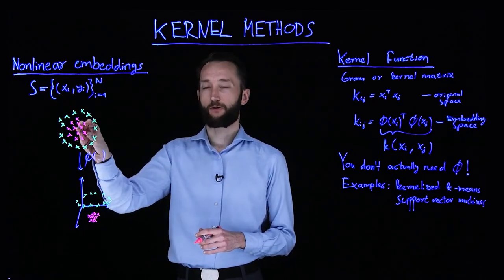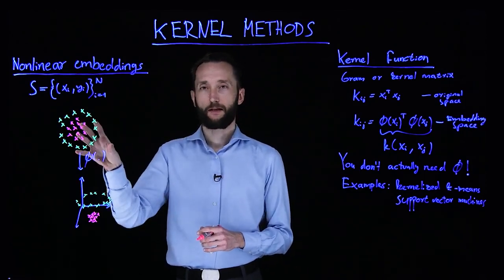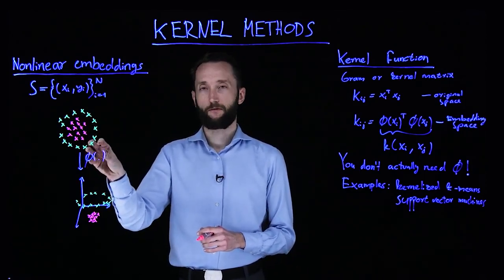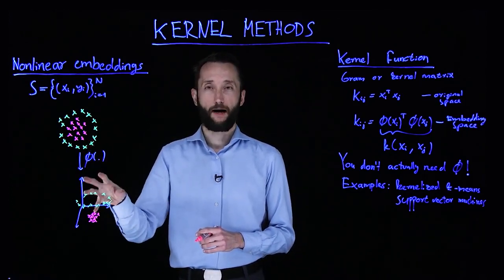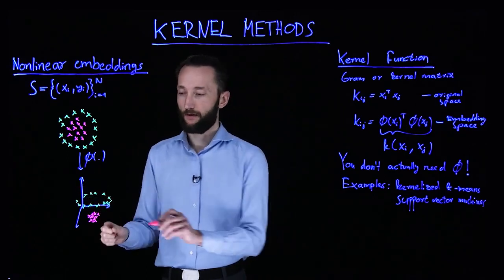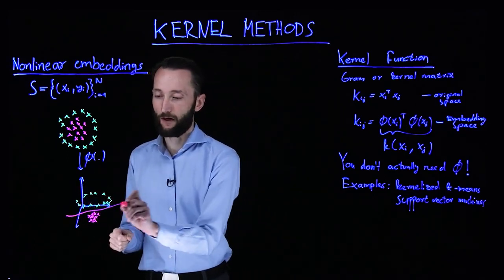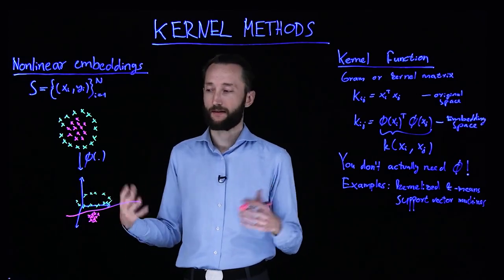For instance, you can have this structure where one class is embedded inside the other. And what we do is we develop some kind of nonlinear embedding that would pull the points apart in some higher-dimensional space. So in this new embedding space, you can easily separate the two classes by, say, a hyperplane, which is the easiest form of classifying two datasets.